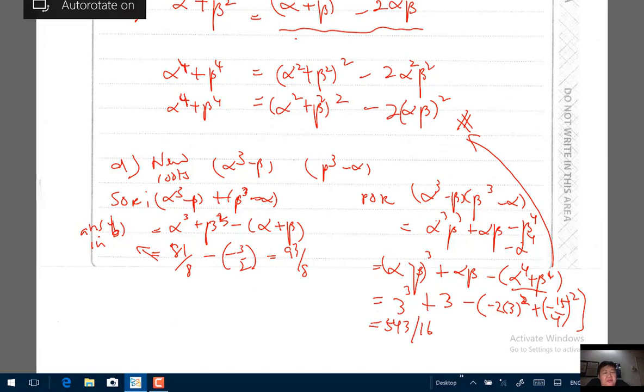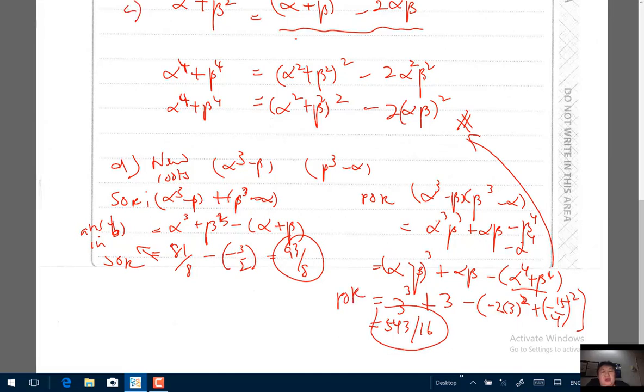So now you know that your sum of roots is 93/8 and product of roots is 543/16. You have to substitute these into the equation. The quadratic equation can be written as x² - (sum of roots)x + (product of roots) = 0. So x² - 93/8·x + 543/16 = 0.